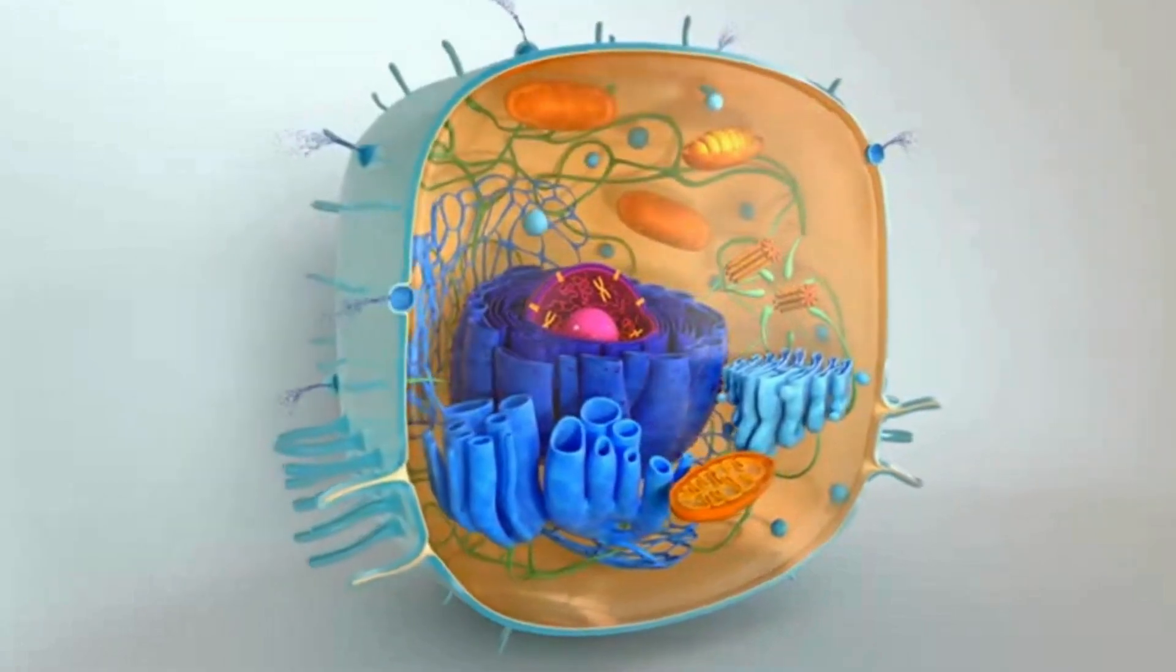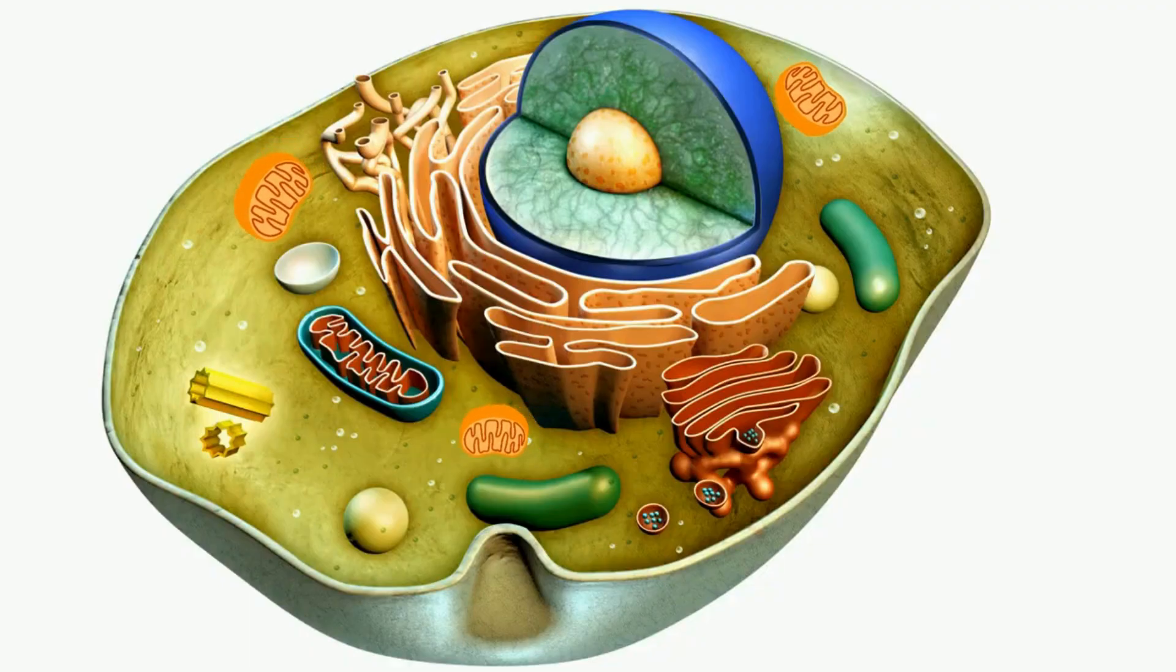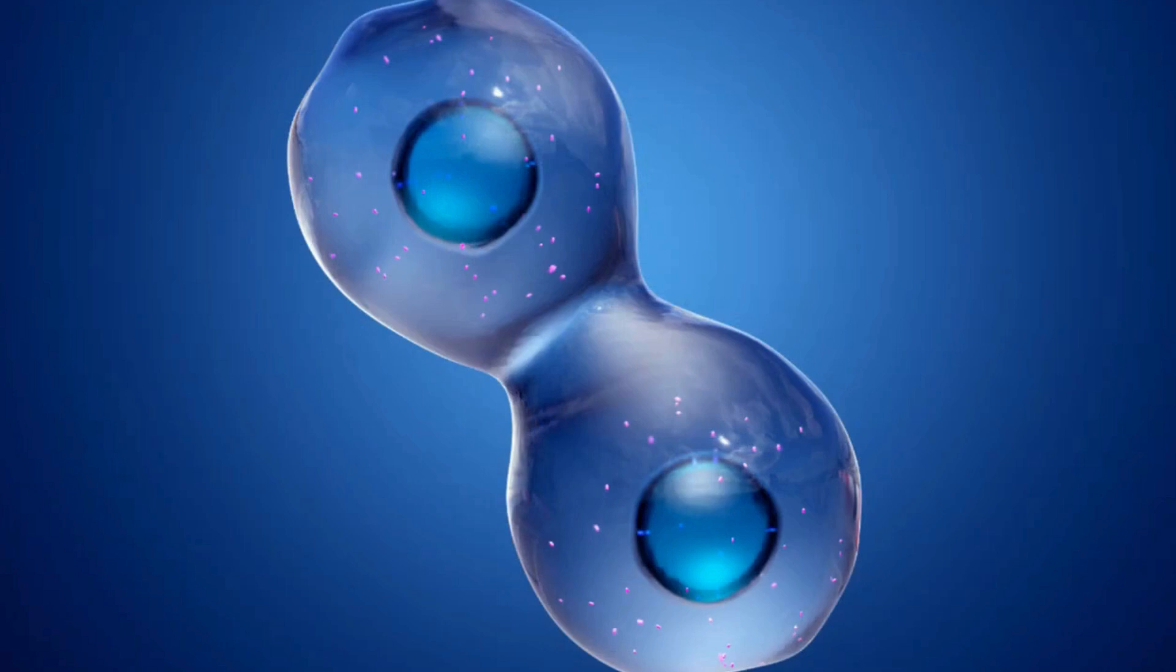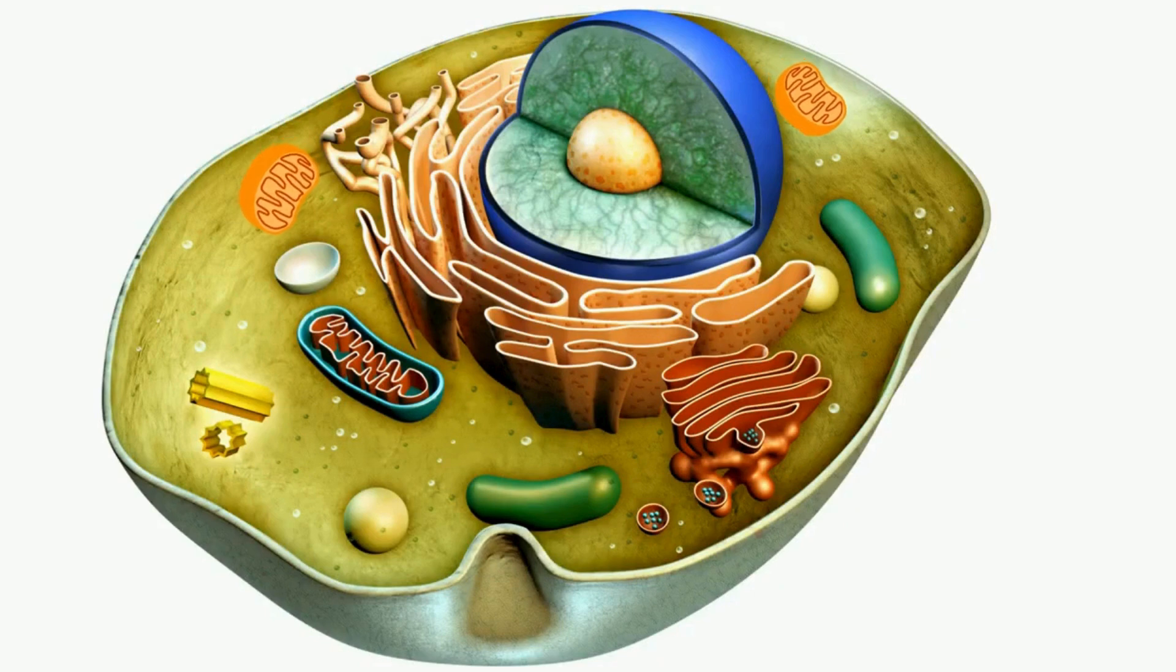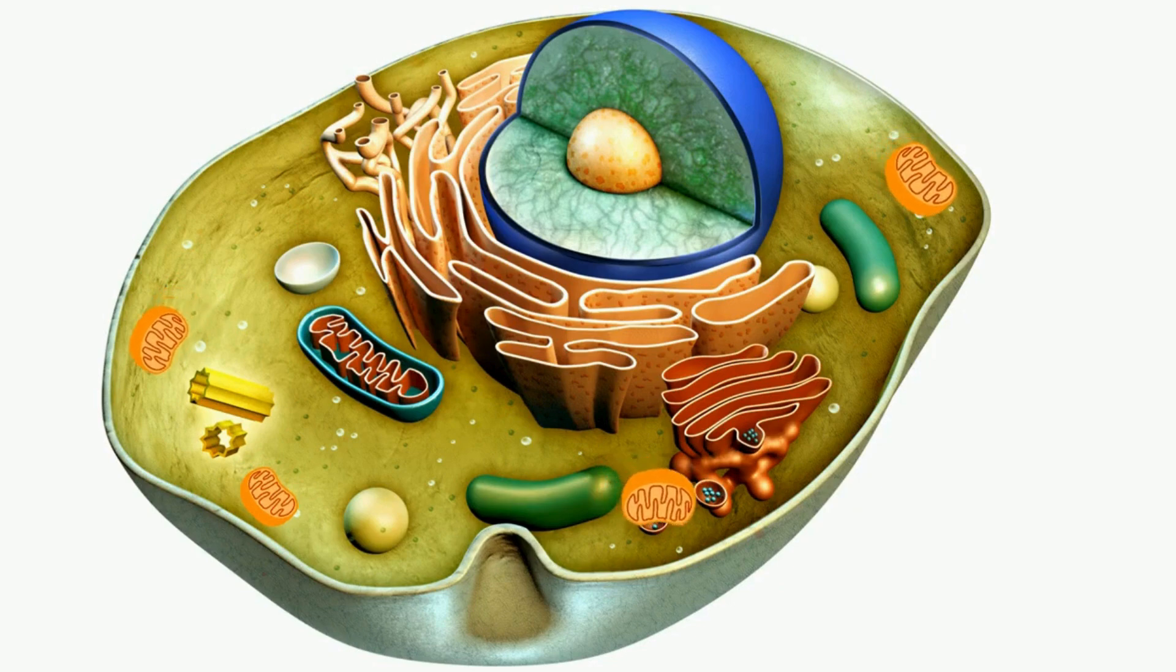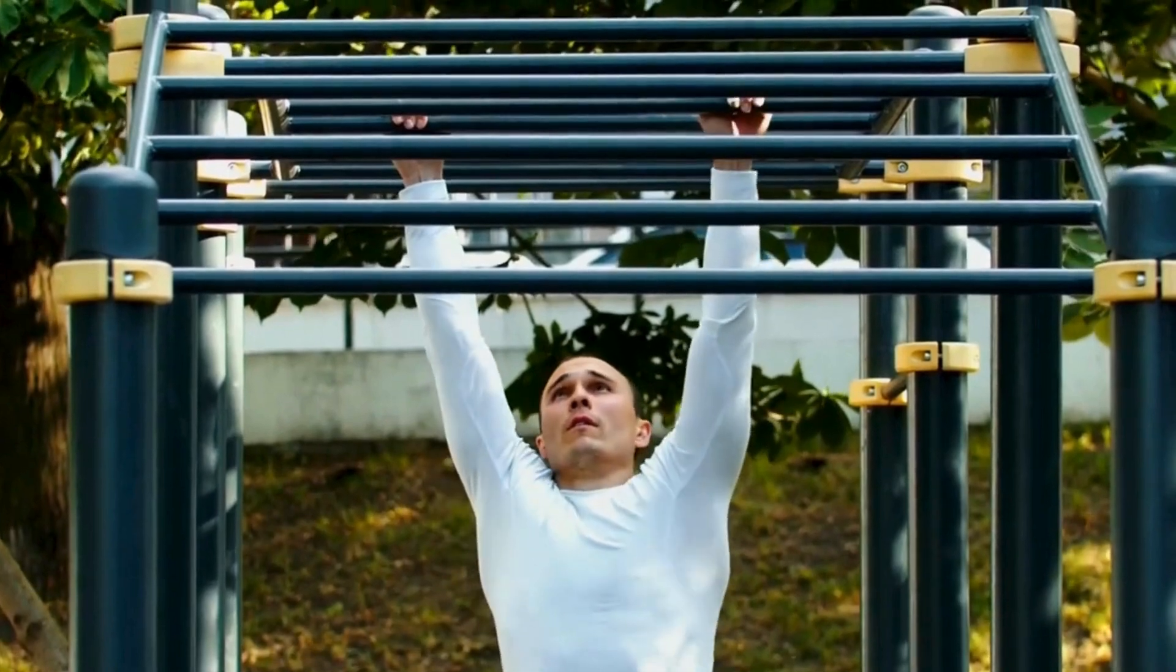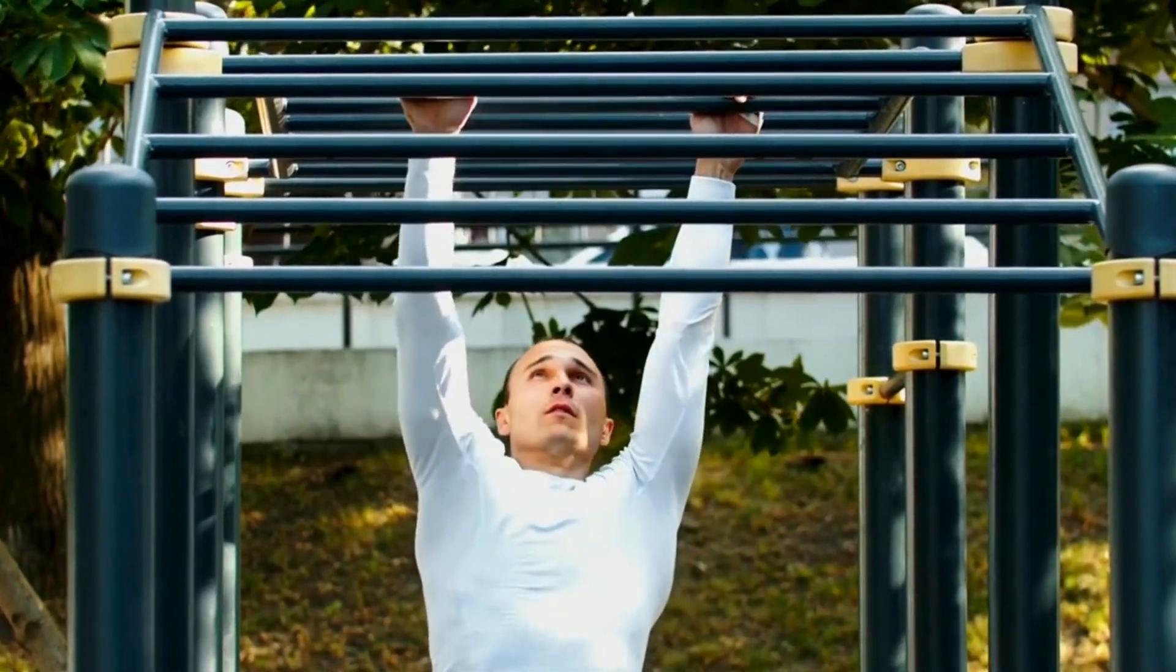They can change shape quickly and move around the cell when needed. When cells need more energy, the mitochondria can reproduce by growing larger and then dividing. For example, say you want to get in shape. As you exercise more, the mitochondria in your muscles will increase in number and navigate to the edges of the cell. This allows these muscles to have more energy. If the cell needs less energy, some mitochondria will die and become inert.